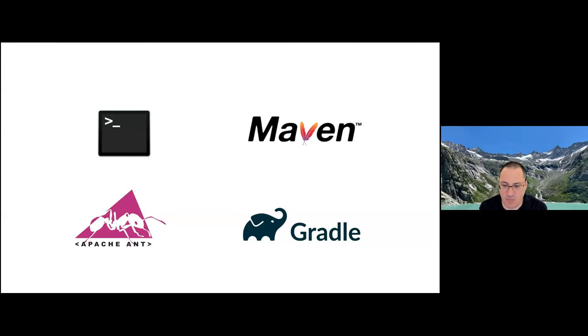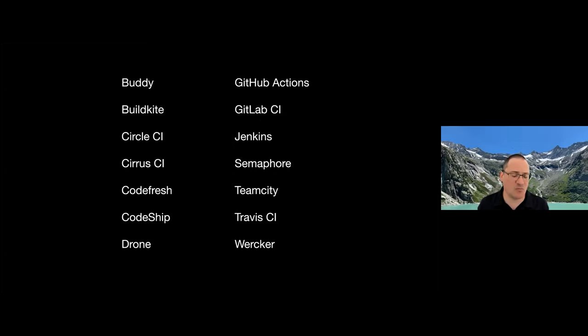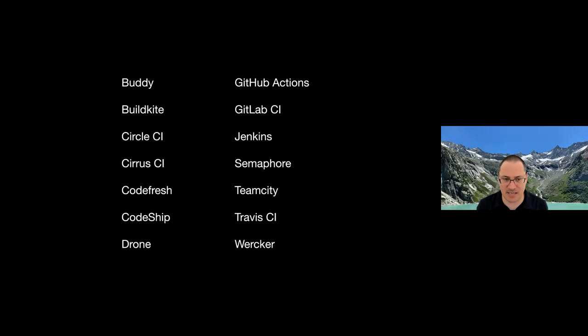You can run JReleaser many ways: from the command line as a CLI tool, as a Maven plugin, as an Ant task, or as a Gradle plugin. We also support running in CI/CD environments. You can run it locally, but if you run releases on any of these 14 different CI options, you can use JReleaser. There is native integration for GitHub Actions. The others may rely on Docker images or downloading the JAR file. We have guides in the documentation for all these services.